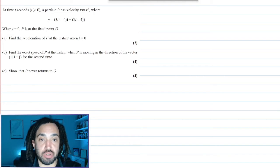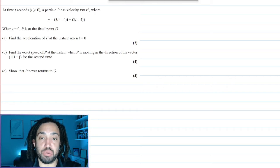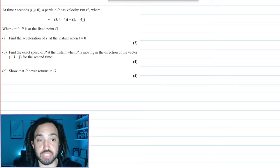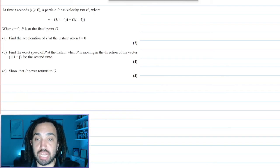When t is equal to 0, P is at the fixed point origin. Find the acceleration at the instant when t is equal to 0.